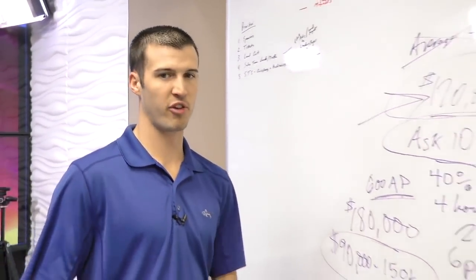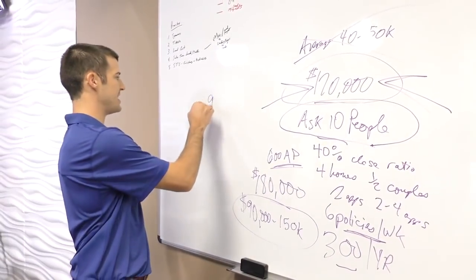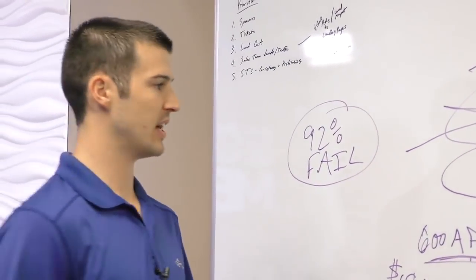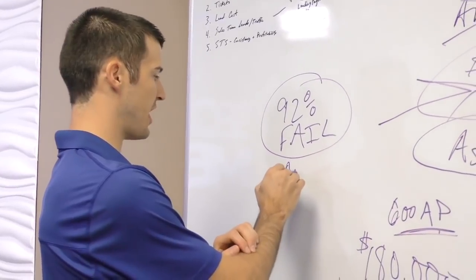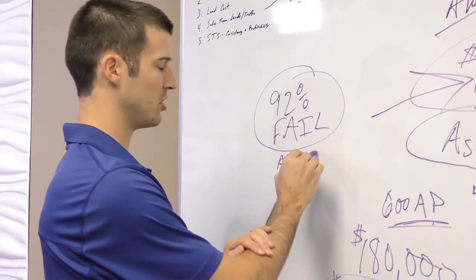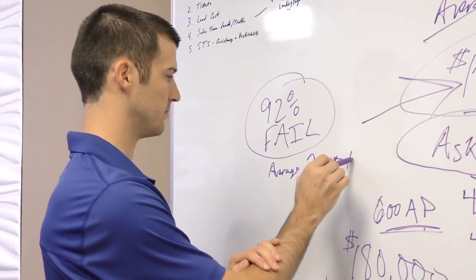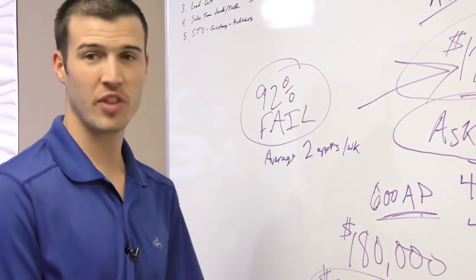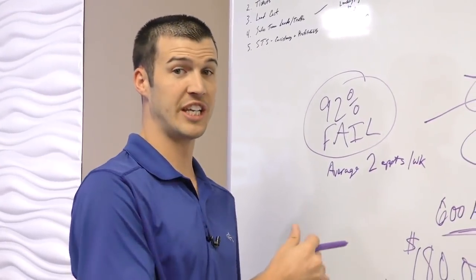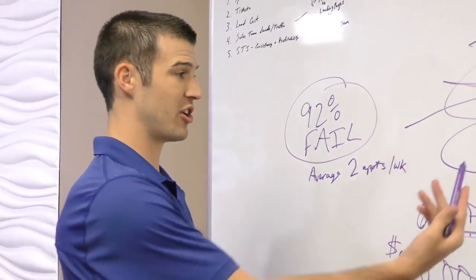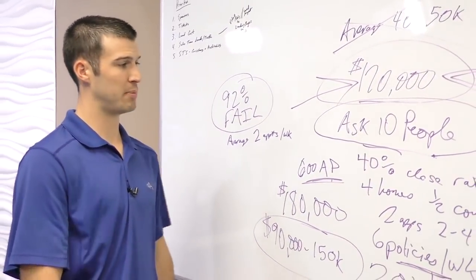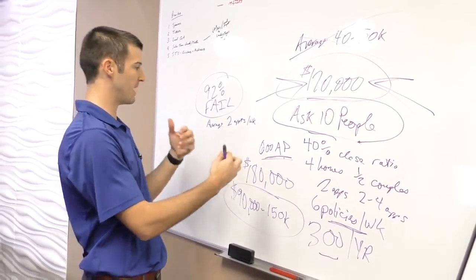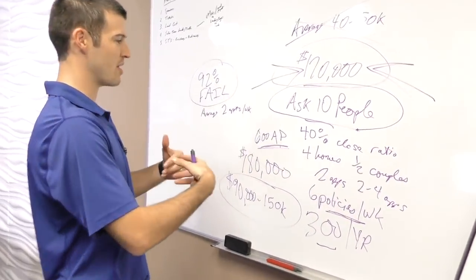The reason why ninety two percent of insurance agents fail is simply because the average agent runs about two appointments a week. The average agent is going to see a hundred people a year if they're lucky. You're going to see more than a hundred people, 120 people every quarter. You're going to see 40 to 50 people a month simply by seeing more people and turning the equation on its head and getting in front of more people.